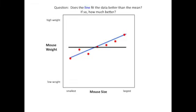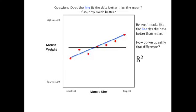Here's another question. Does the blue line that we just drew fit the data better than the mean? If so, how much better? By eye, it looks like the blue line fits the data better than the mean. How do we quantify that difference? R squared.